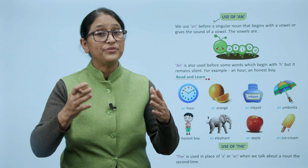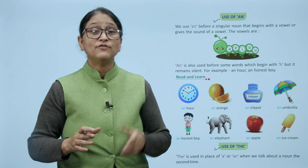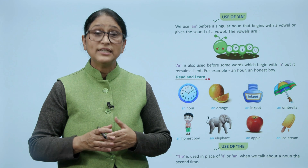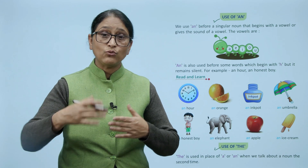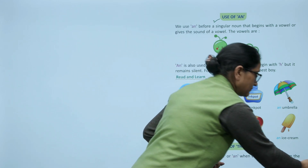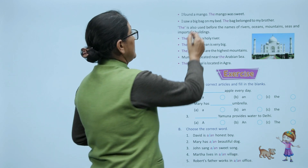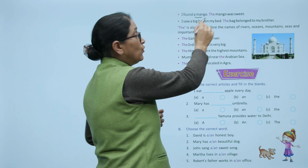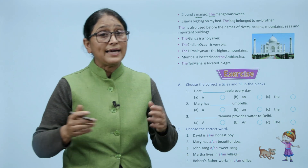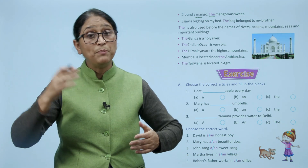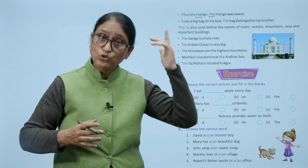Now the third is use of the. The is used in place of a or an when we talk about a noun the second time. Hum a or an ke baad the ka use kab karte hai? Jab noun ko second time hum use karte hai. For example: I found a mango. The mango was sweet. I saw a big bag on my bed. The bag belonged to my brother.